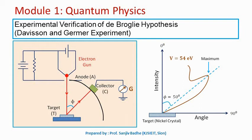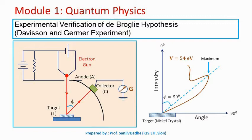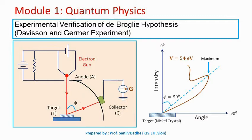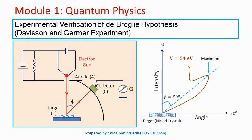A number of attempts were made to find experimental evidence showing a wave associated with a particle and to calculate the wavelength of that wave. The Davisson and Germer experiment was one such attempt. Let us discuss this experiment and how its results confirm the existence of a wave associated with the electron and the correctness of the de Broglie relation lambda equal to h upon p.